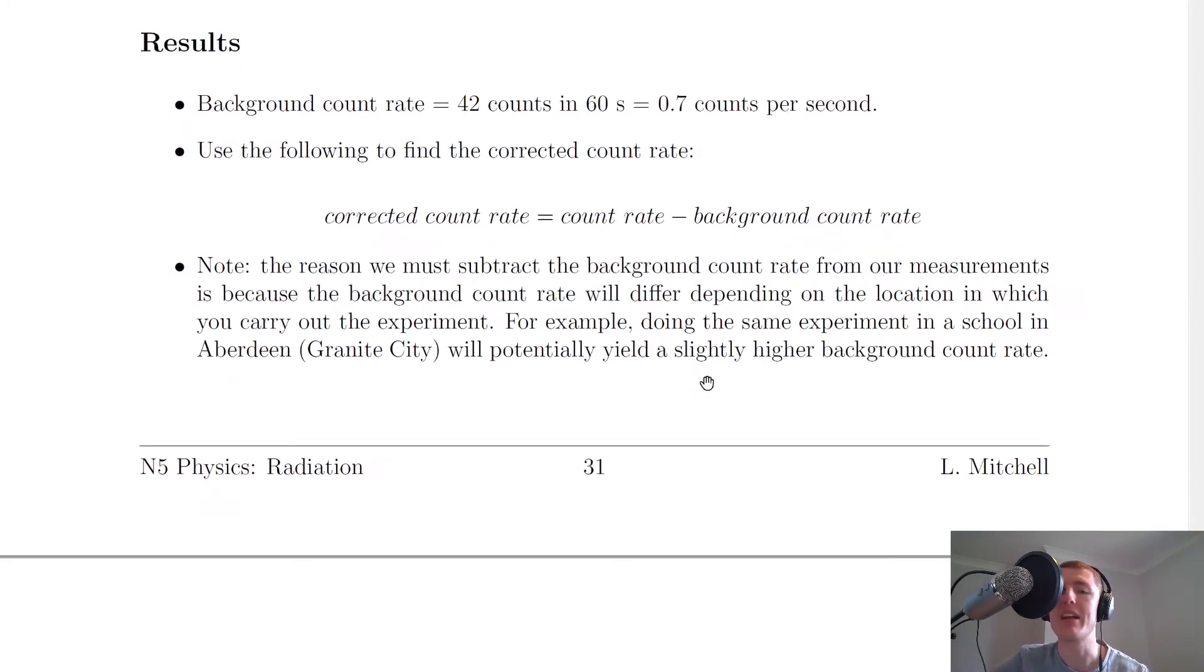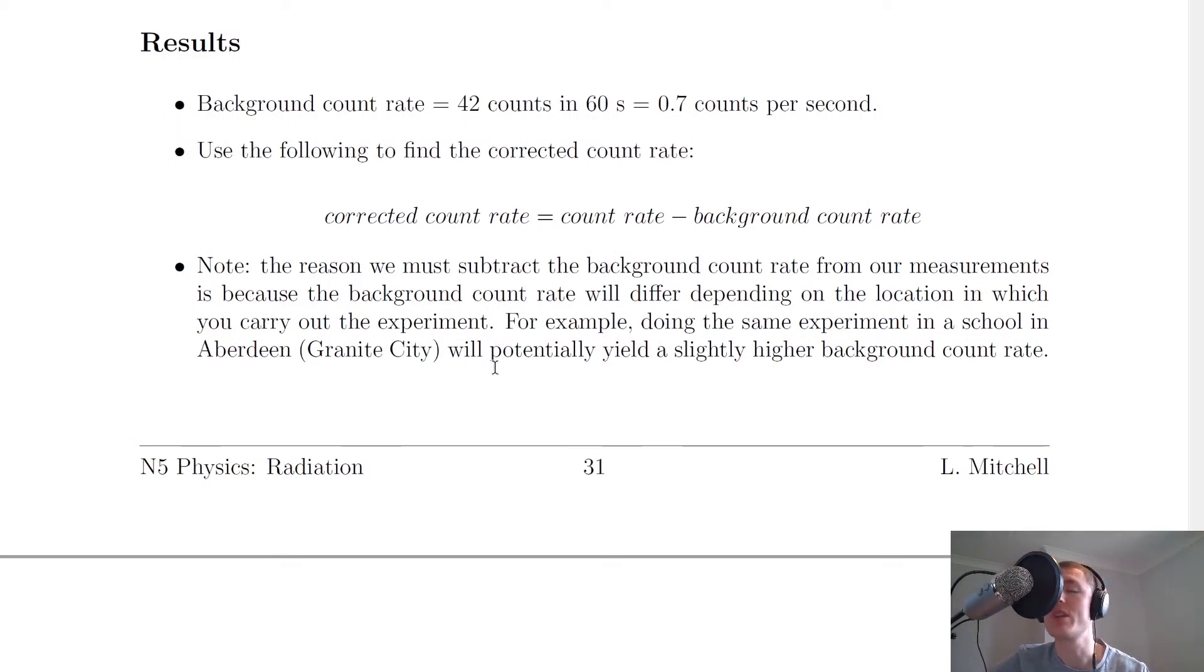For example, doing the same experiment in a school in Aberdeen, which is also known as Granite City, will potentially yield a slightly higher background count rate. So you don't want your results in the particular school and location that you're in to be different from another pupil's results in a school in a different location in Scotland.